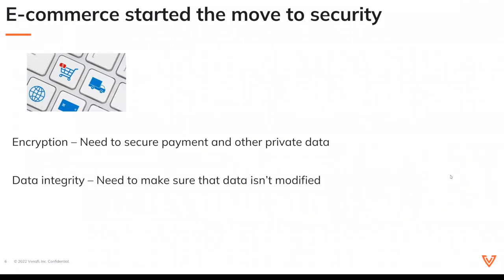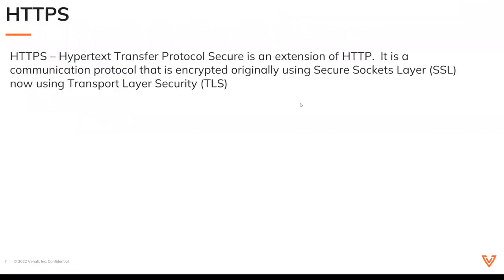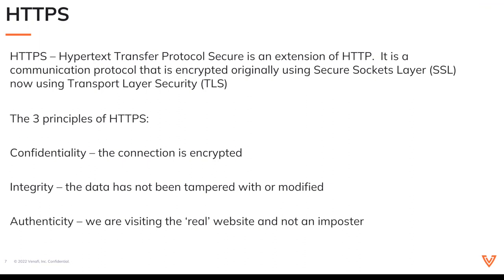We also need to make sure there's data integrity — if I enter something, I want to make sure it gets on the other end exactly as I entered it. And conversely, if I read something, I want to make sure I'm reading it exactly as it came back to me. There also needs to be authentication. So if I'm buying something from I Love Cats, I want to make sure I'm buying from I Love Cats and not I Love Dogs. And so along comes HTTPS, which is an extension of HTTP — it didn't really replace it, it's an extension of it. It's a communication protocol originally encrypted using SSL, which is really just an older version of TLS. The three principles of HTTPS are confidentiality, meaning the connection is encrypted; integrity, the data has not been changed; and authenticity, meaning I Love Cats is exactly who I think I'm talking to.